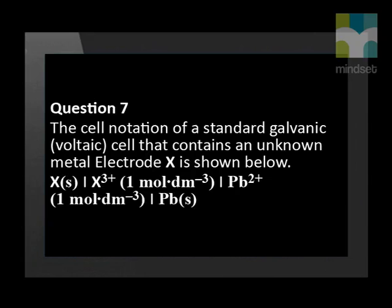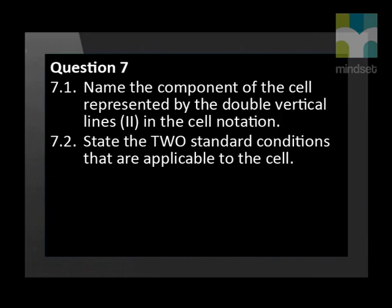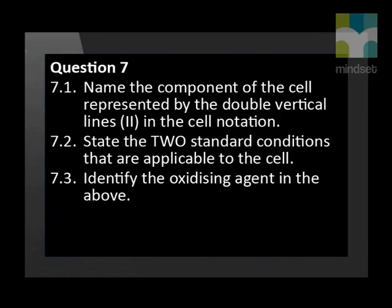The cell notation of a standard galvanic cell that contains an unknown metal electrode X is shown. The cell is at standard conditions. The first question is: name the component of the cell represented by the double vertical lines in the cell notation. State the two standard conditions that are applicable to the cell. Identify the oxidizing agent in the above cell.